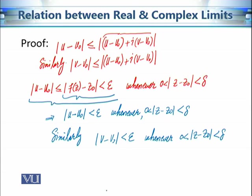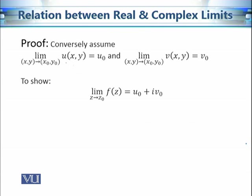If we want to prove that the limit of u is u₀, we choose epsilon, and we need to find delta. For this particular epsilon, we find delta corresponding to the limit of f(z) being z₀, and then use that delta. Now let's assume the second part is true and we want to prove the first part. So far, we have shown that if the complex limit exists, the real limits follow. Now we want to prove the converse: if these two real limits exist and equal u₀ and v₀, then the limit of this complex valued function is u₀ + i·v₀.